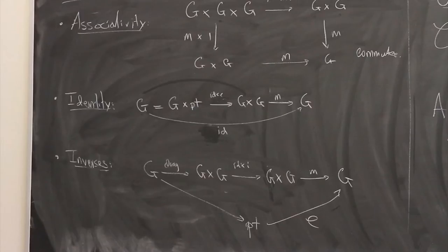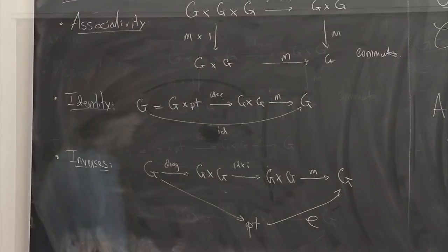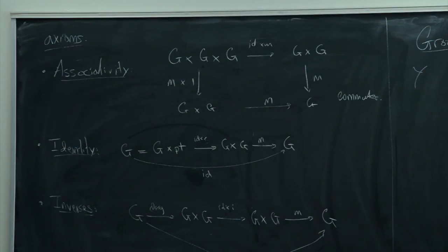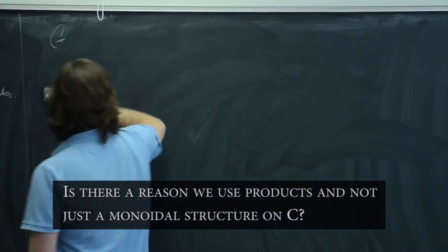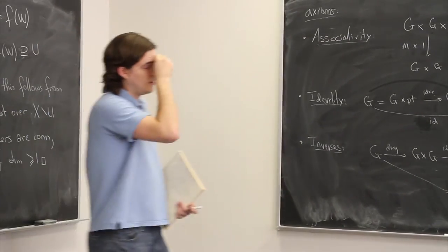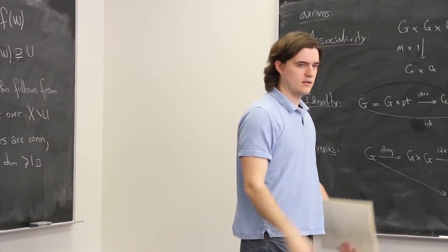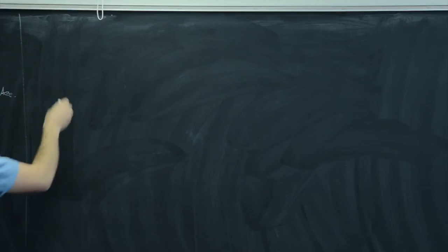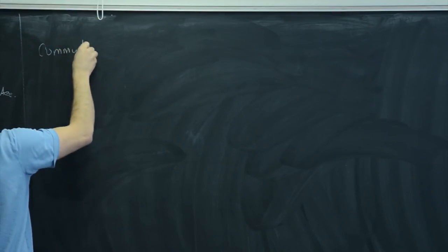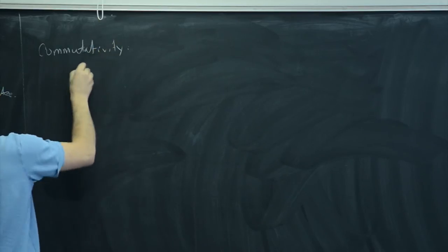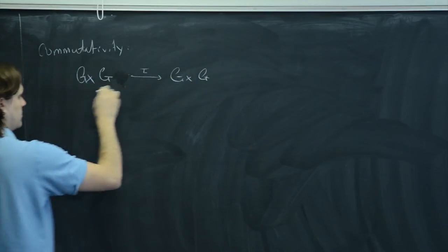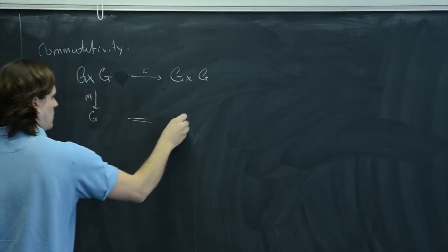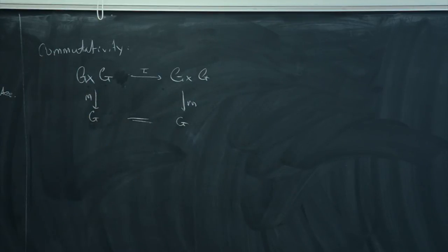If you apply this definition where your category C is the category of sets, you get normal groups. In other situations you get other things. You can also talk about commutative groups — there's a commutativity axiom that says this diagram commutes: there's a switching-of-factors map τ which takes (X, Y) to (Y, X), and commutativity means this diagram commutes.